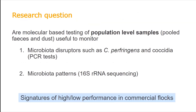Our research question was: if those biomarkers are to be used in commercial flocks, we should probably be looking at population-level samples, since treatments on flocks are for the whole flock and the whole farm, not for individual birds. With this in mind, we wanted to see if testing pooled feces and dust — looking at microbiota disruptors such as Clostridium perfringens (which causes necrotic enteritis) and several species of Eimeria by PCR — could relate to microbiota patterns and performance in commercial flocks.